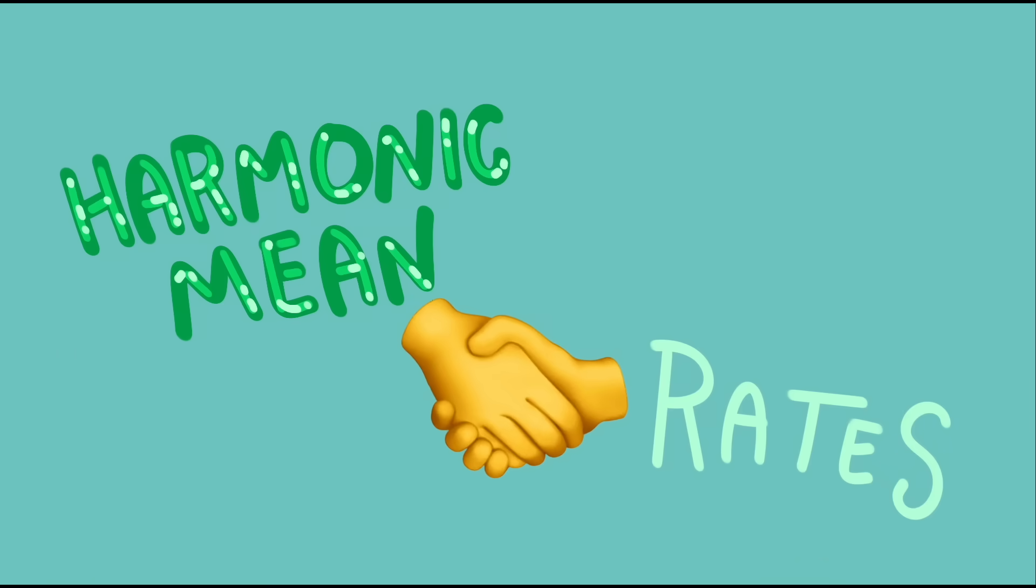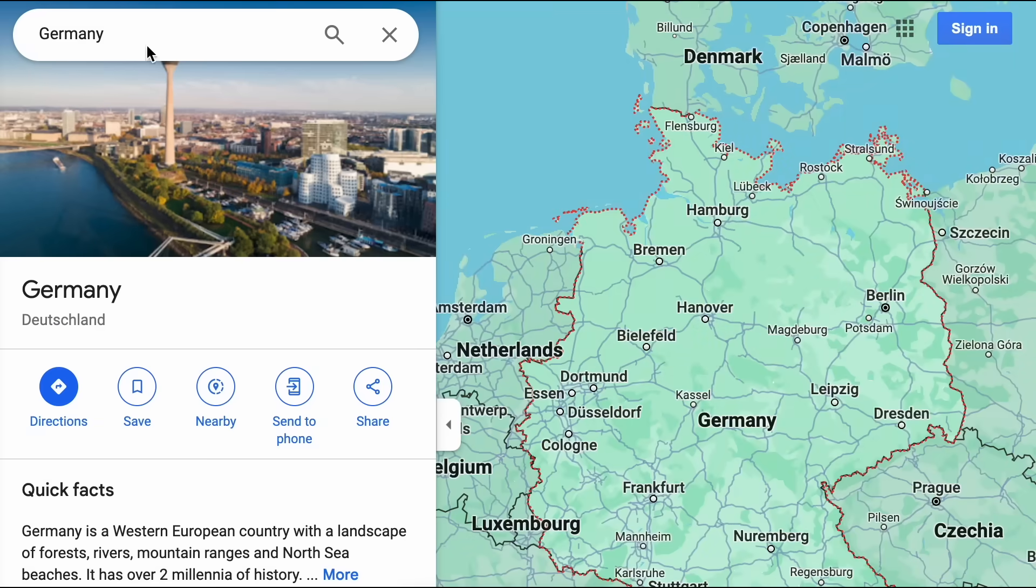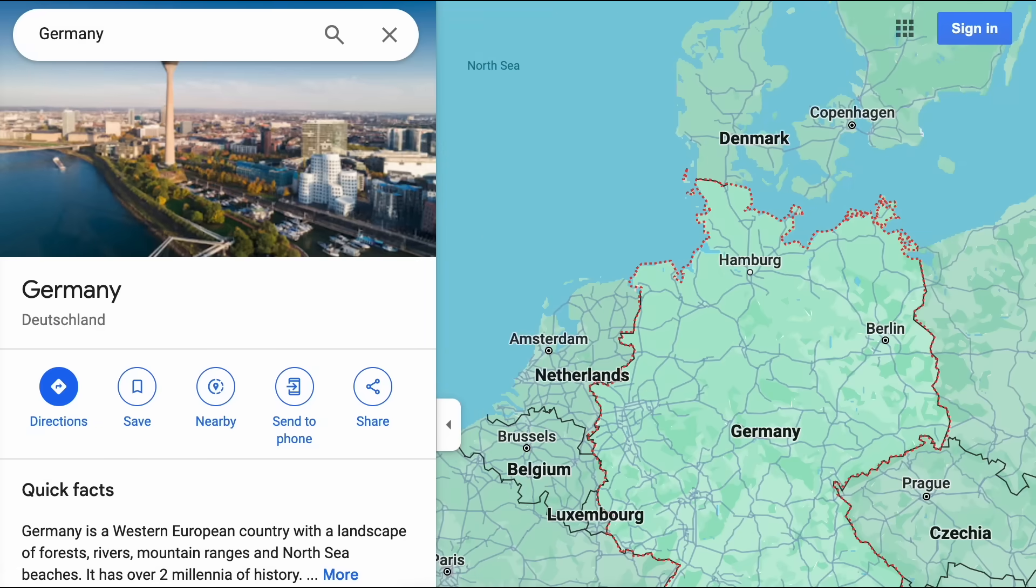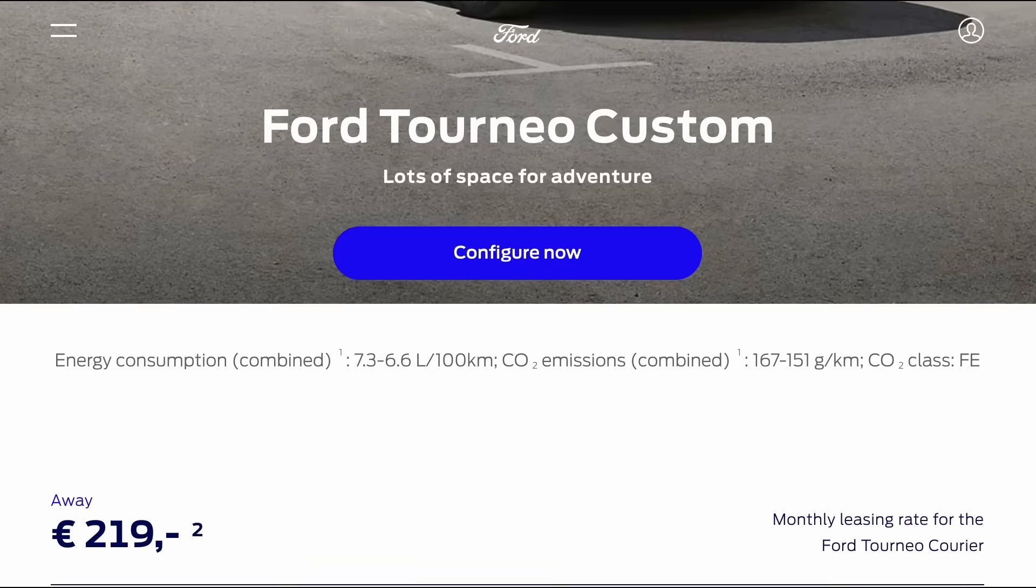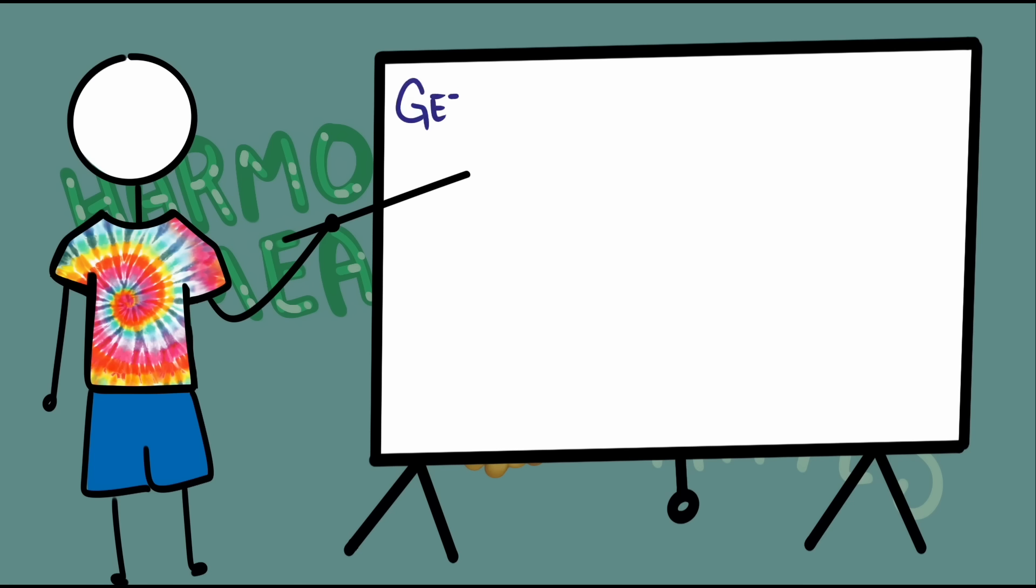The harmonic mean comes up when finding averages of some rates, but not all rates. It depends on how the rate is given. For example, in many countries around the world, mileage is given as liters per 100 kilometers. To find the average gas mileage given in liters per 100 kilometers, we can just use the arithmetic mean. And why don't we need to use the harmonic mean?